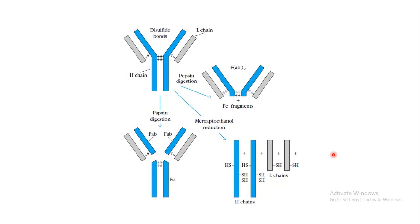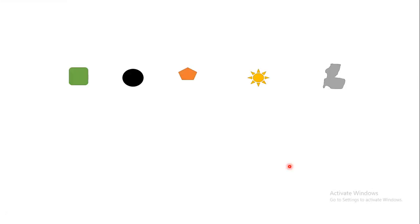Antibodies can be digested by several enzymes to produce several fragments. For example, harsh pepsin digestion produces a Fab fragment, while the Fc region is totally gone. Papain digestion produces two Fab fragments and one Fc fragment. Mild digestion like beta-mercaptoethanol reduction, which reduces the disulfide bond, produces two heavy chains and two light chains.